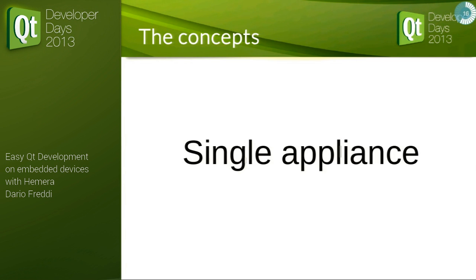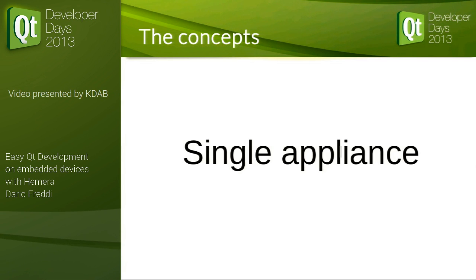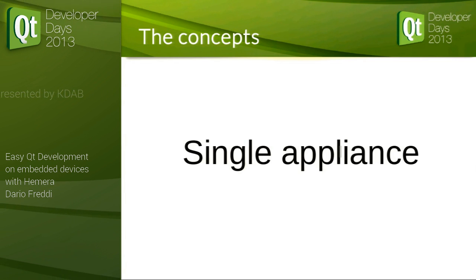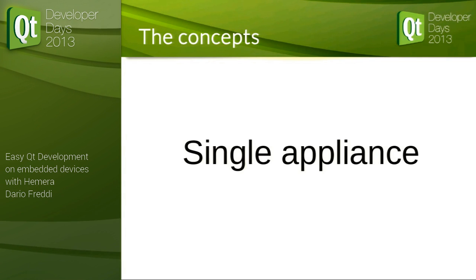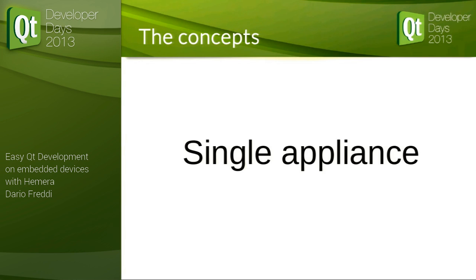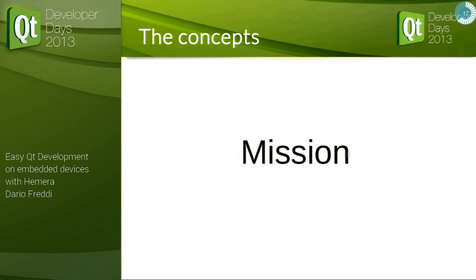The second concept is the single appliance. We call single appliances those devices — for example, a touchscreen domotics panel — where you have to do one thing and do it well, which is one of the best use cases for embedded. The entire SDK and session management is built around having one single application at a time, which is not a strict requirement but what we do best, and we make it run in the best way possible.